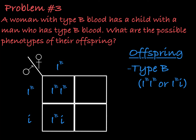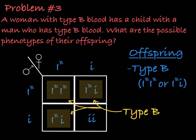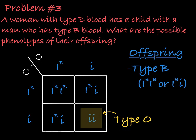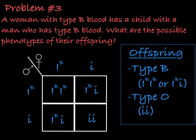Finally, if both parents are heterozygous ib little i, then they could have a child with type B blood, either homozygous or heterozygous, or a child with type O blood if they both give the child their recessive little i allele. So overall, these two type B parents could have a child that is type B or type O.